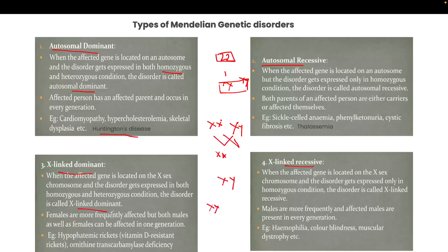In X-linked dominant disorder, females are more frequently affected but both males and females can be affected in one generation. Examples of X-linked dominant disorders include hypophosphatemic rickets (Vitamin D-resistant rickets) and ornithine transcarbamylase deficiency.